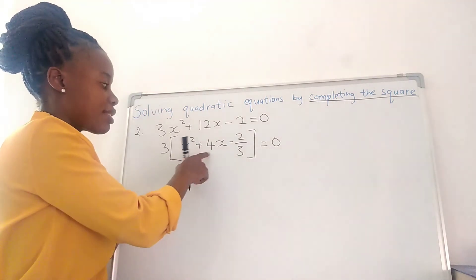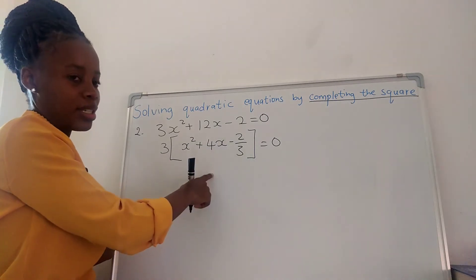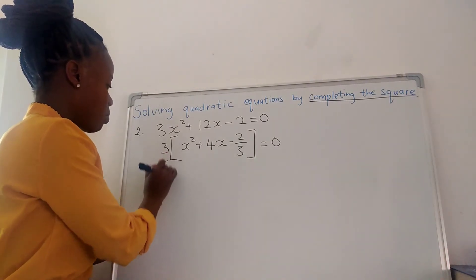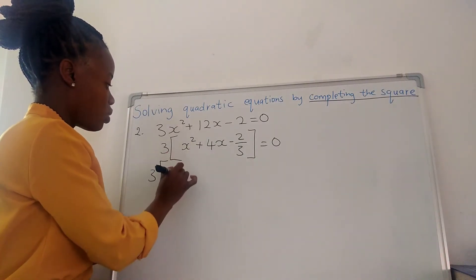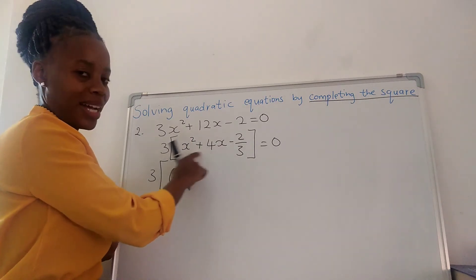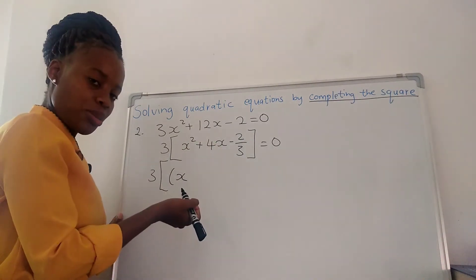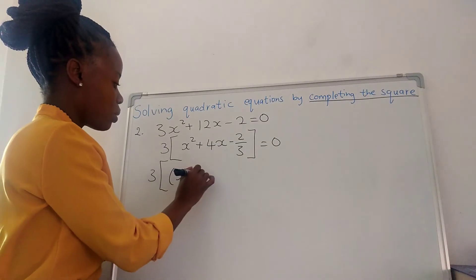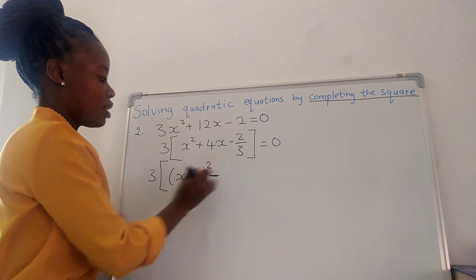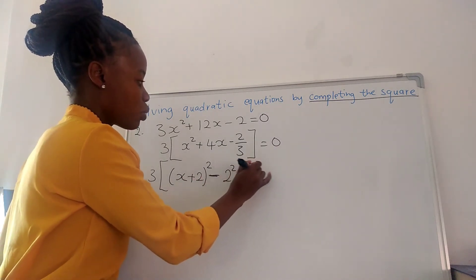This is equal to 0. Inside, the coefficient of x squared is 1, so we can start completing the square. The next term is 4x and this one is a constant. So we can start completing the square inside. The 3 is still outside. We divide the coefficient of x by 2 — this is positive 4, so it's going to be positive 2, because 4 divided by 2 is 2. Then you square, then you subtract. You always subtract — you subtract 2 squared.